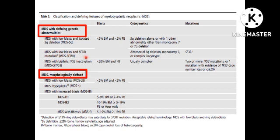MDS with low blast and SF3B1 mutation will not have 5Q deletion, monosomy 7, or complex karyotype — you must demonstrate the SF3B1 mutation by NGS. MDS with biallelic TP53 inactivation has a blast percentage less than 20% both in the marrow and peripheral blood, with usually complex cytogenetics. You need 2 or more TP53 mutations by NGS, or a single TP53 mutation with evidence of TP53 copy number loss.